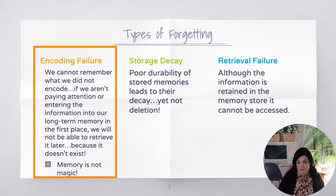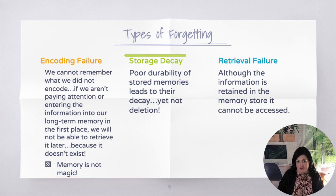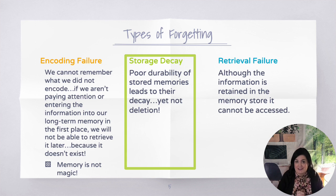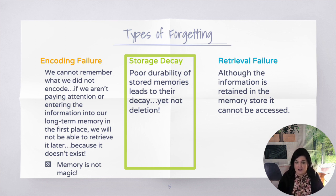The second type of forgetting is called storage decay. It's the poor durability of stored memory, which leads to their decay — but not their complete deletion. They don't totally go away forever; they're not deleted. They're somewhere in there, but they're very, very faint.